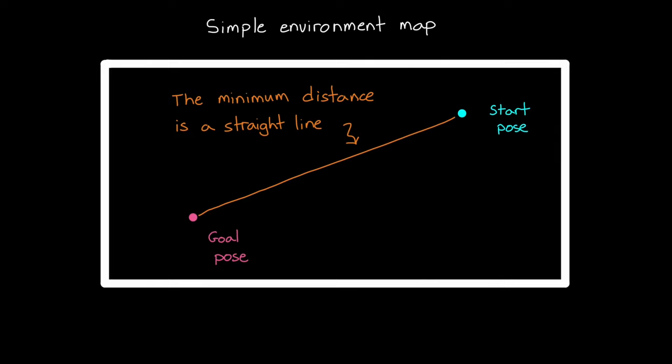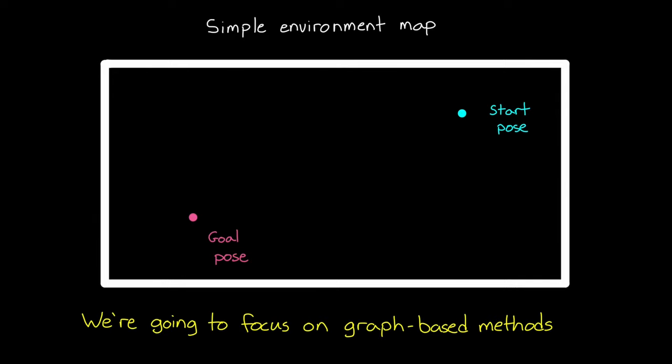Analytically solving for the shortest path like this is trivial for our simple environment, and this type of solution could even work for environments with some obstacles and constraints as well. But for many problems, the obstacles and the dynamics of the system are too complex to generate an optimal solution analytically. So we approach it by solving the problem numerically. As I said at the beginning of this video, we're going to focus on graph-based methods to numerically find the path with the shortest length.